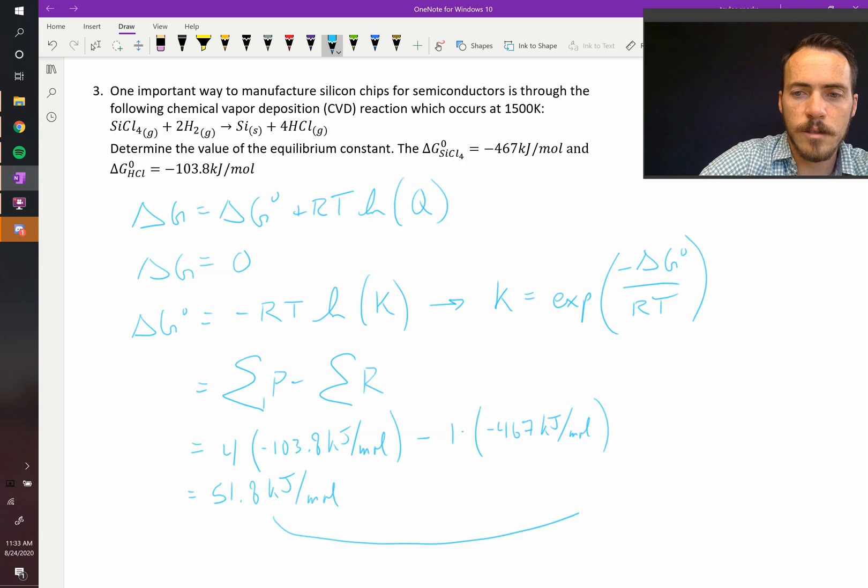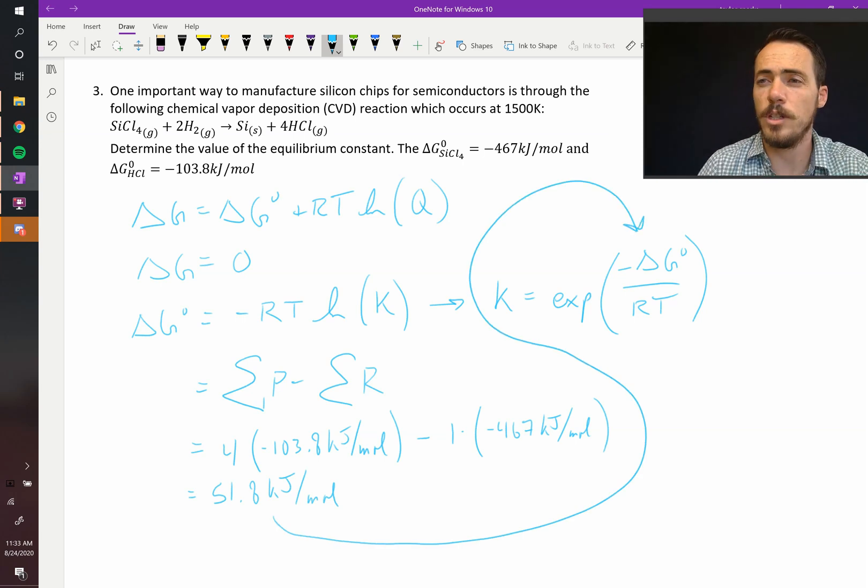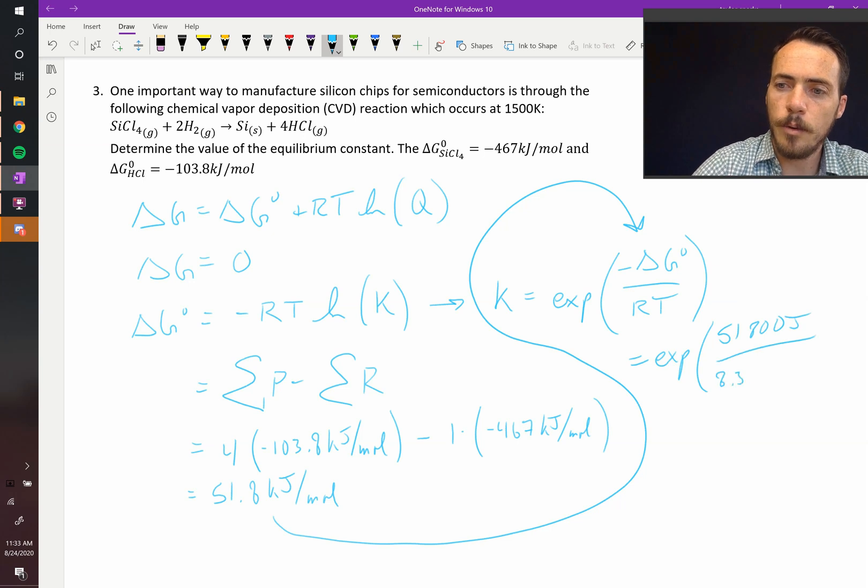So now we can take this and plug it in for our negative delta G naught. This is going to be equal to the exponential of, I'm going to write it in joules, 51,800 joules divided by 8.314 times 1500 kelvin. This was joules per mole kelvin. So all of our units cancel out, and what we end up with is a value of 1.57 e to the negative 2.